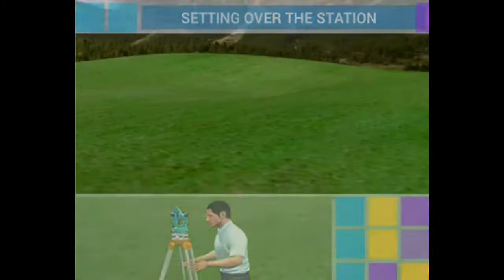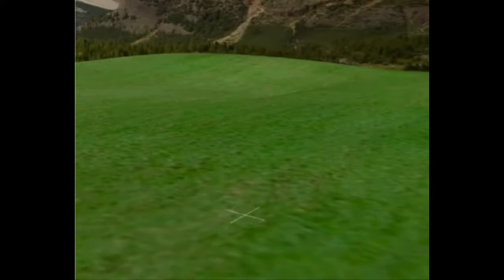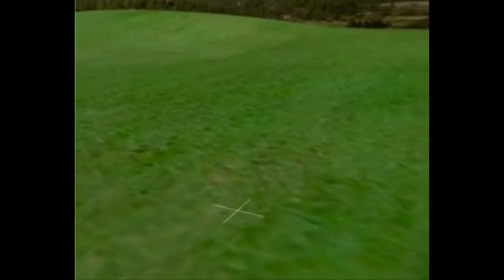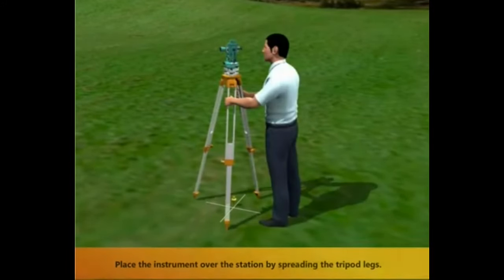Let us see how the instrument is set up over the station point. The marking on the ground shows the station point. Place the instrument over the station by spreading the tripod legs.